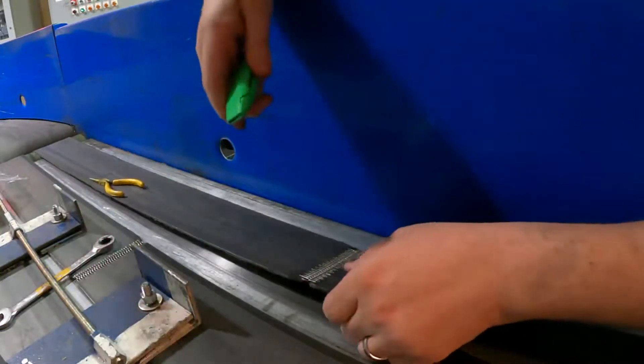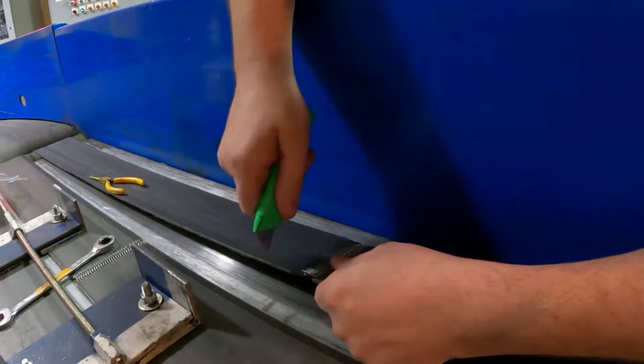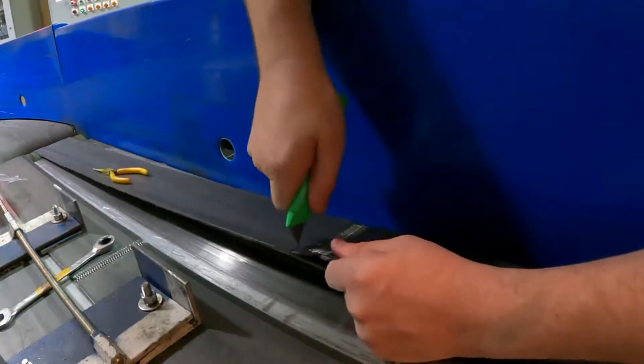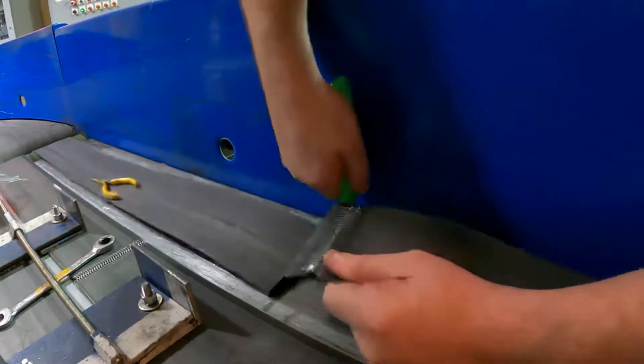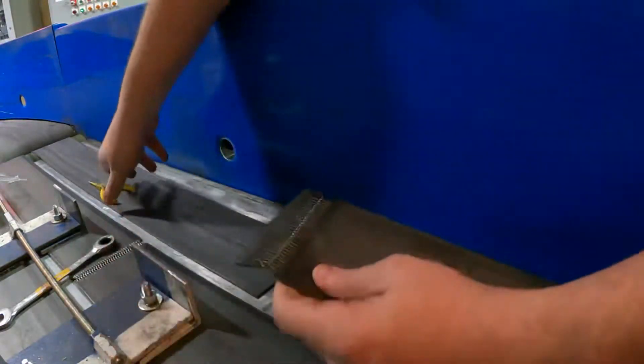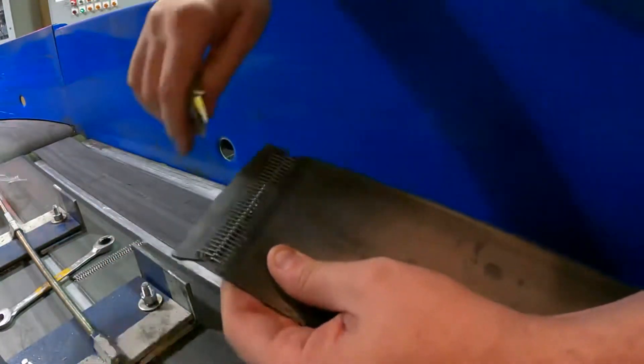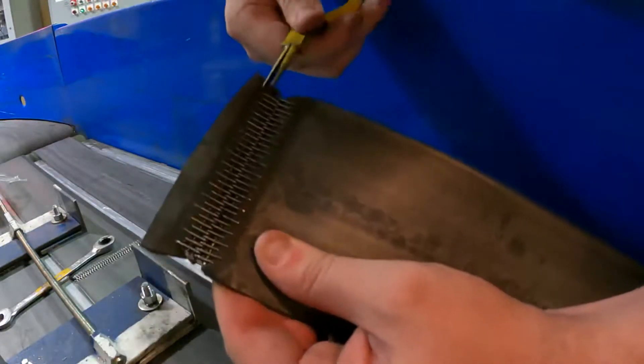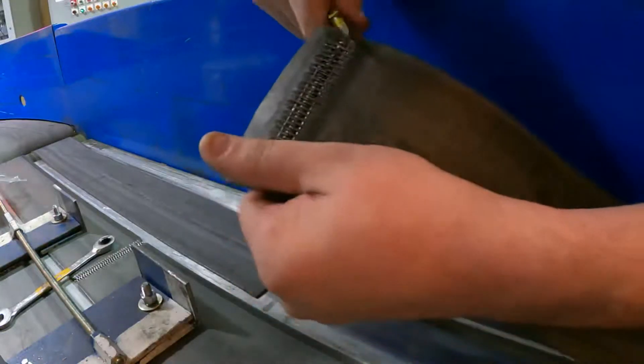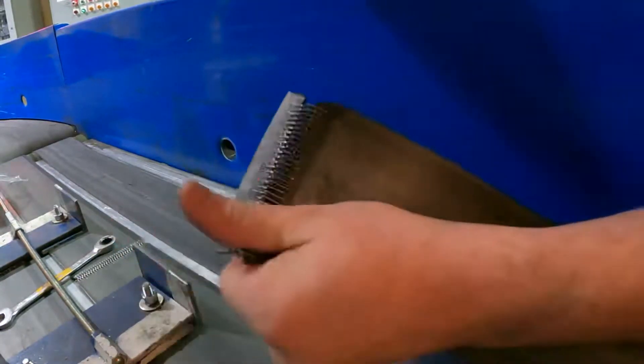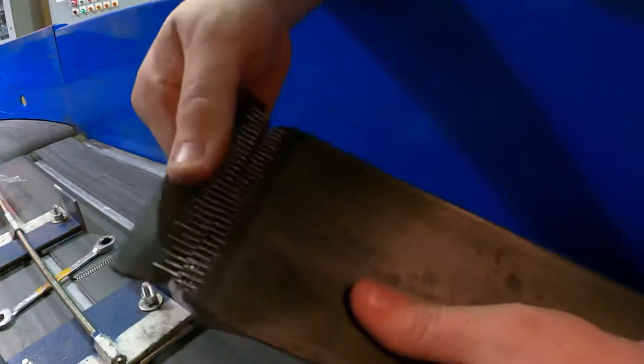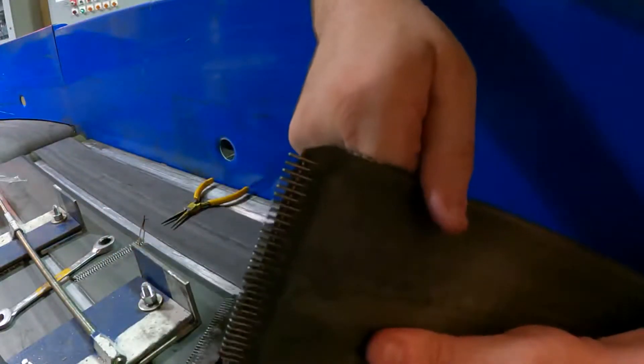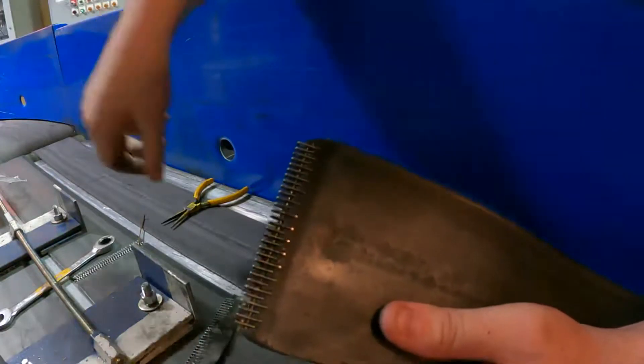You're going to start by cutting the belt near the lacing. Then we take and pull the pin out of the belt. Now you got your lacing ready so you can lace in a new belt.